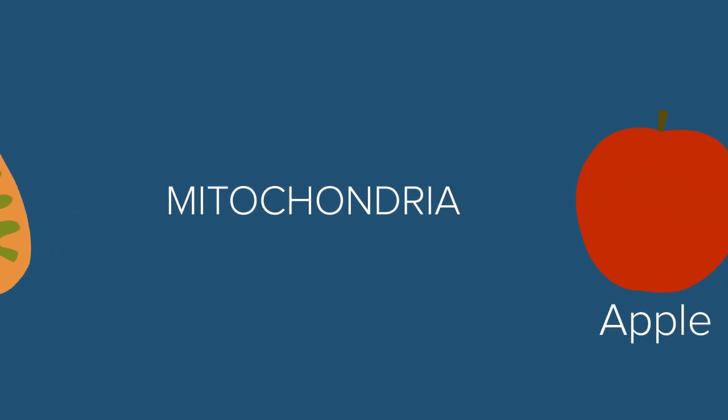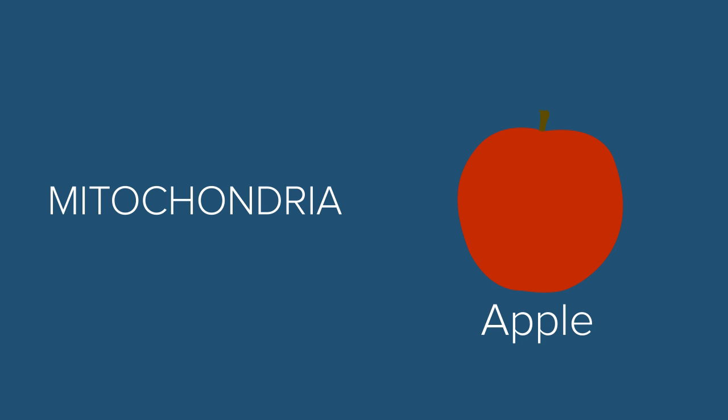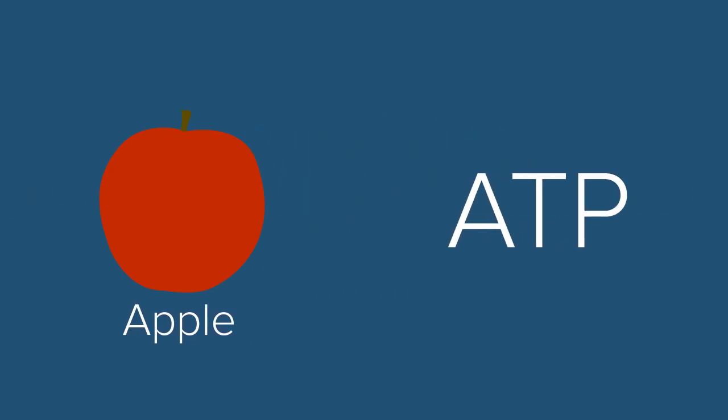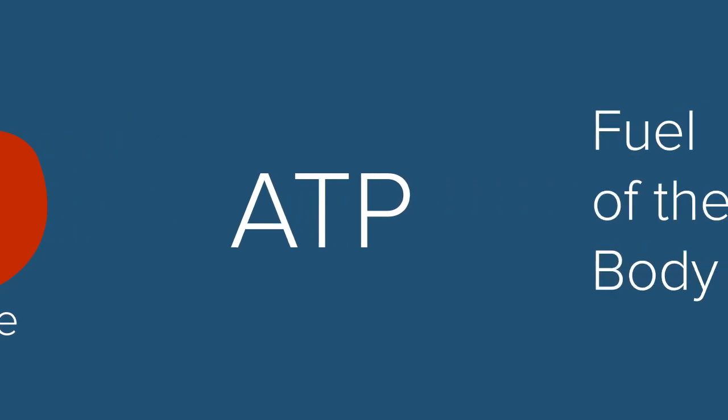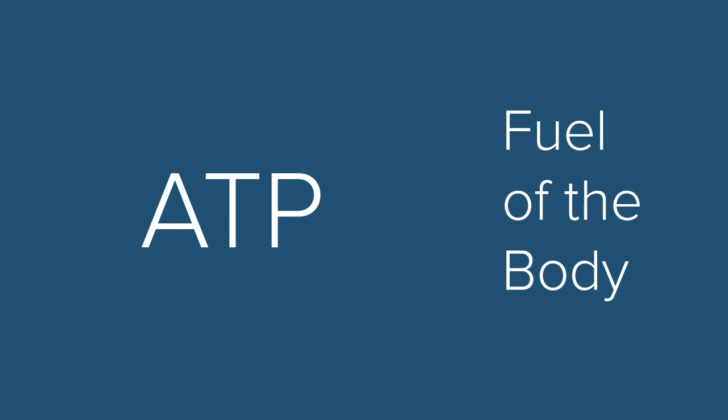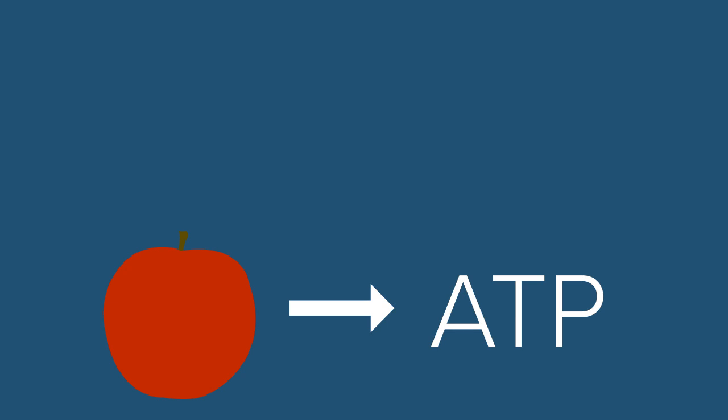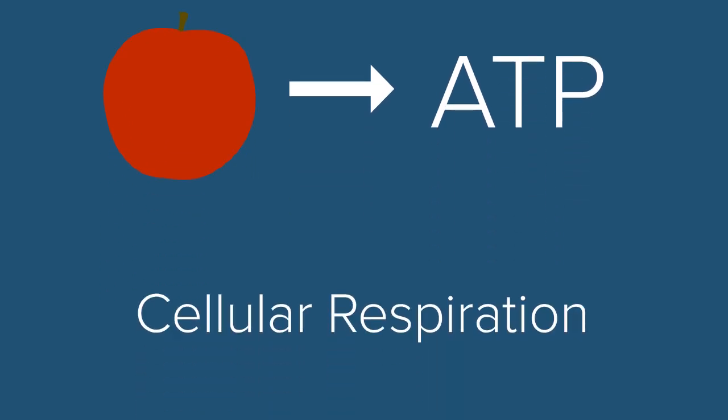Mitochondria convert the food you eat in the form of organic molecules into chemical energy that can be used by the cell, called ATP. ATP is the fuel of the human body. The process of converting organic nutrients that you eat into ATP is called cellular respiration.